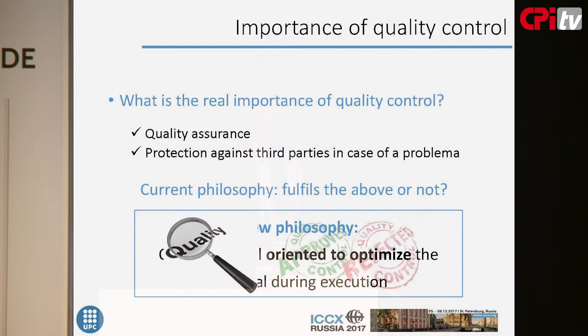First is the quality assurance of the material and protection against third parties in case of any problem. The question is: is the current control we are carrying out in work jobs with fiber-reinforced concrete correct, or can this control be optimized? This is the question.